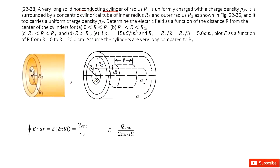This is straightforward. As we learned for Gauss's law, we can draw a cylindrical Gaussian surface. The electric field times the surface area of the Gaussian surface equals the enclosed charge divided by epsilon naught. So we can write the electric field as enclosed charge divided by 2 pi epsilon naught R times L.